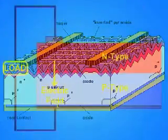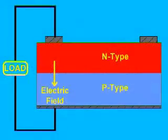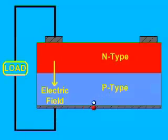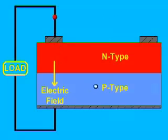When sunlight strikes the solar cells, electrons are ejected from the atoms, and the permanent electric field in the junction steers them to the n-type side. If a wire is connecting both sides of the solar cell, electric current can flow whenever sunlight is striking the solar cell.